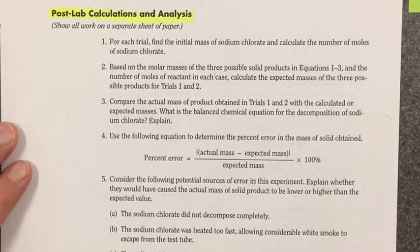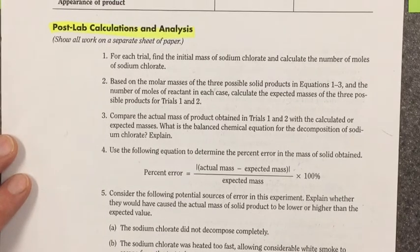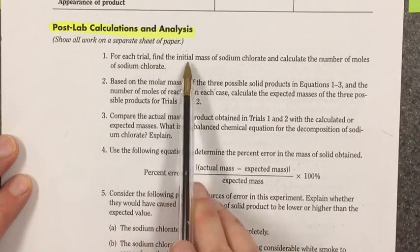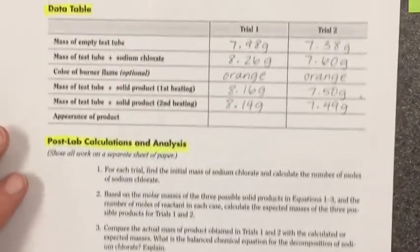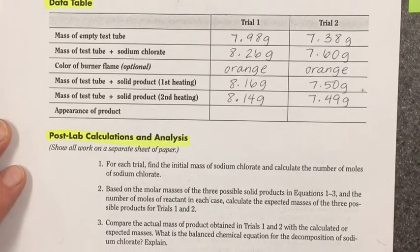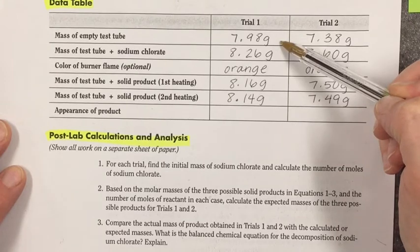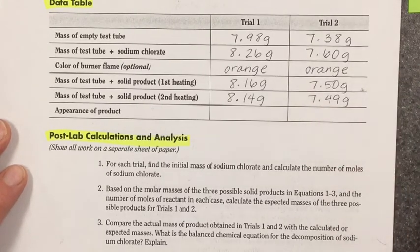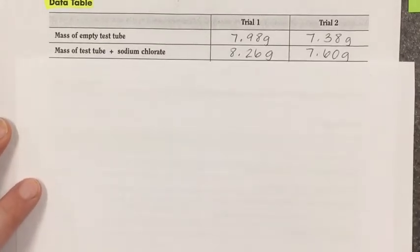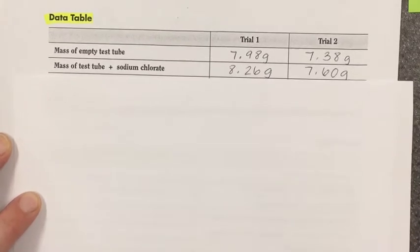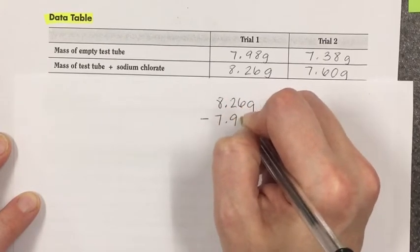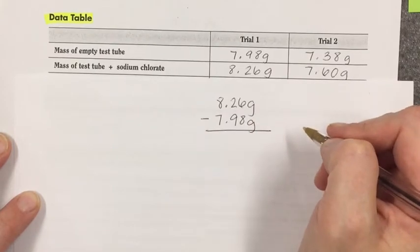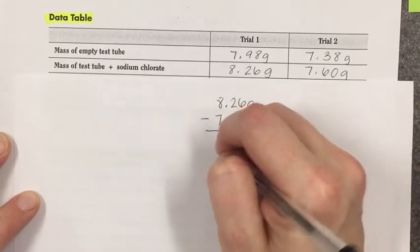The post-lab questions also need to be included in your lab report. So there are several post-lab questions that are here. For the first one, for each trial, find the initial mass of sodium chlorate and calculate the number of moles of sodium chlorate. So if I look at trial one, I can go ahead and do this for trial one. The empty test tube was 7.98 grams. With the sodium chlorate, it was 8.26 grams. So this is a pretty easy calculation. All I'm going to do is take 8.26 grams and subtract the mass of the test tube. And that should leave me with the mass of sodium chlorate, and I believe it is 0.28 grams.